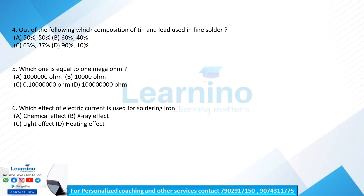Question 6: which effect of electric current is used for soldering iron? Option A: chemical effect, Option B: X-ray effect, Option C: light effect, Option D: heating effect. The heating effect is used for soldering iron — option D is the correct answer.